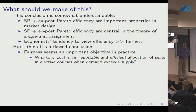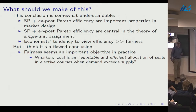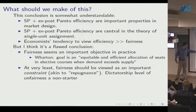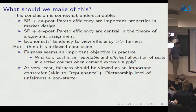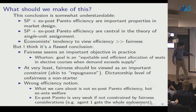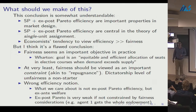This is illustrated by Wharton's course allocation mechanism description, which explicitly discusses equity and efficiency. At the very least, if fairness isn't viewed as an objective, it might be reasonable to view it as a constraint — analogous to a repugnance constraint — where dictatorship levels of unfairness are likely a non-starter in practice.